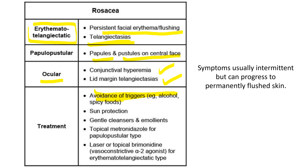Treatment includes avoidance of triggers like alcohol and spicy foods, use of gentle cleansers, and protection from UV light. Use a topical antibiotic like metronidazole for the papulopustular variant. For the erythematotelangiectatic type, we can use vasoconstrictive agents like brimonidine, which is an alpha-2 agonist, as well as laser therapy.